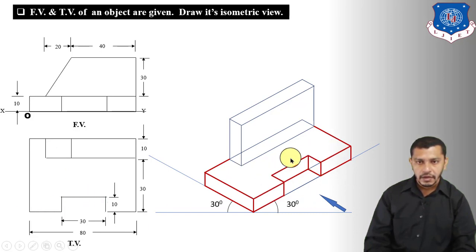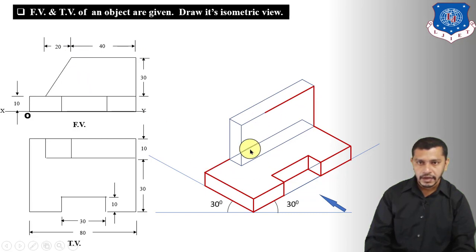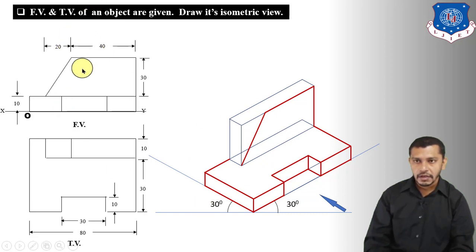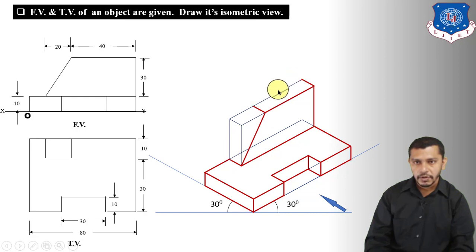Now draw the isometric view of the second part. Start with the front view: height 30mm, this edge 40mm. From this point, connect to this corner to show the slant edge. The width of this second part is 10mm, so from each of these points draw lines parallel to the width axis. Connect the corresponding points to get the final isometric view of this second part.